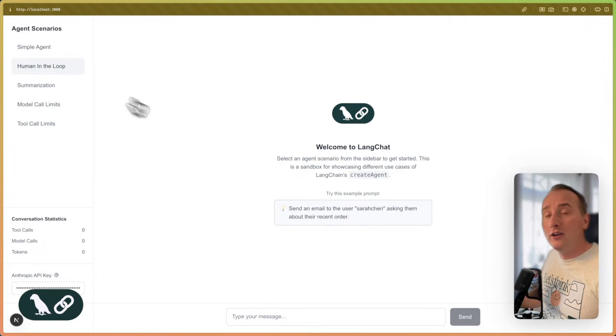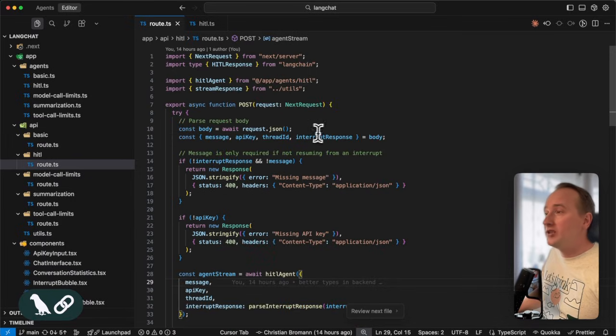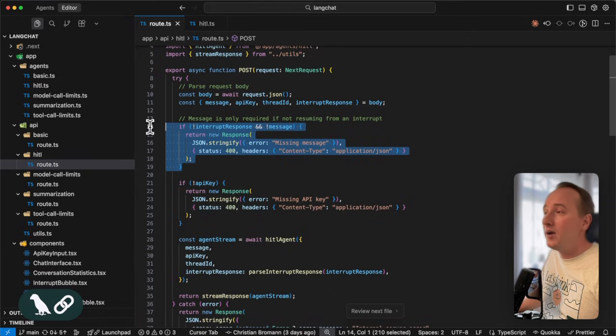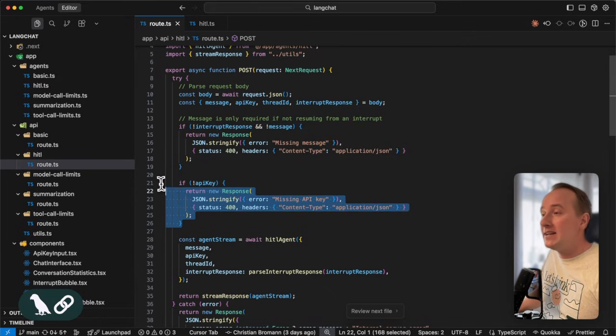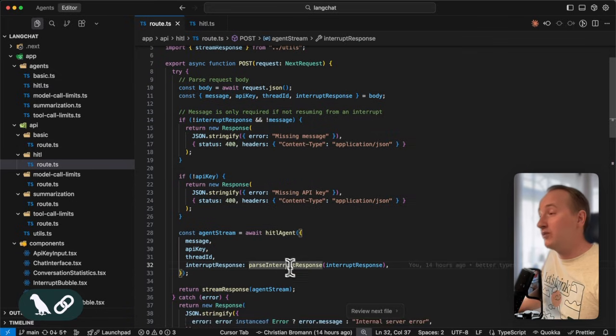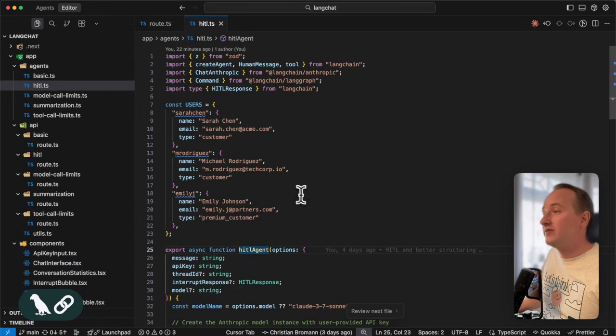For the human in the loop agent, I can send specific customers emails and ask them about their recent order. Whenever I hit the send button, we're going to hit a Next.js endpoint, which allows us to parse the body of the request and then we verify if we have a user prompt as well as an API key, so we can actually access a large language model.